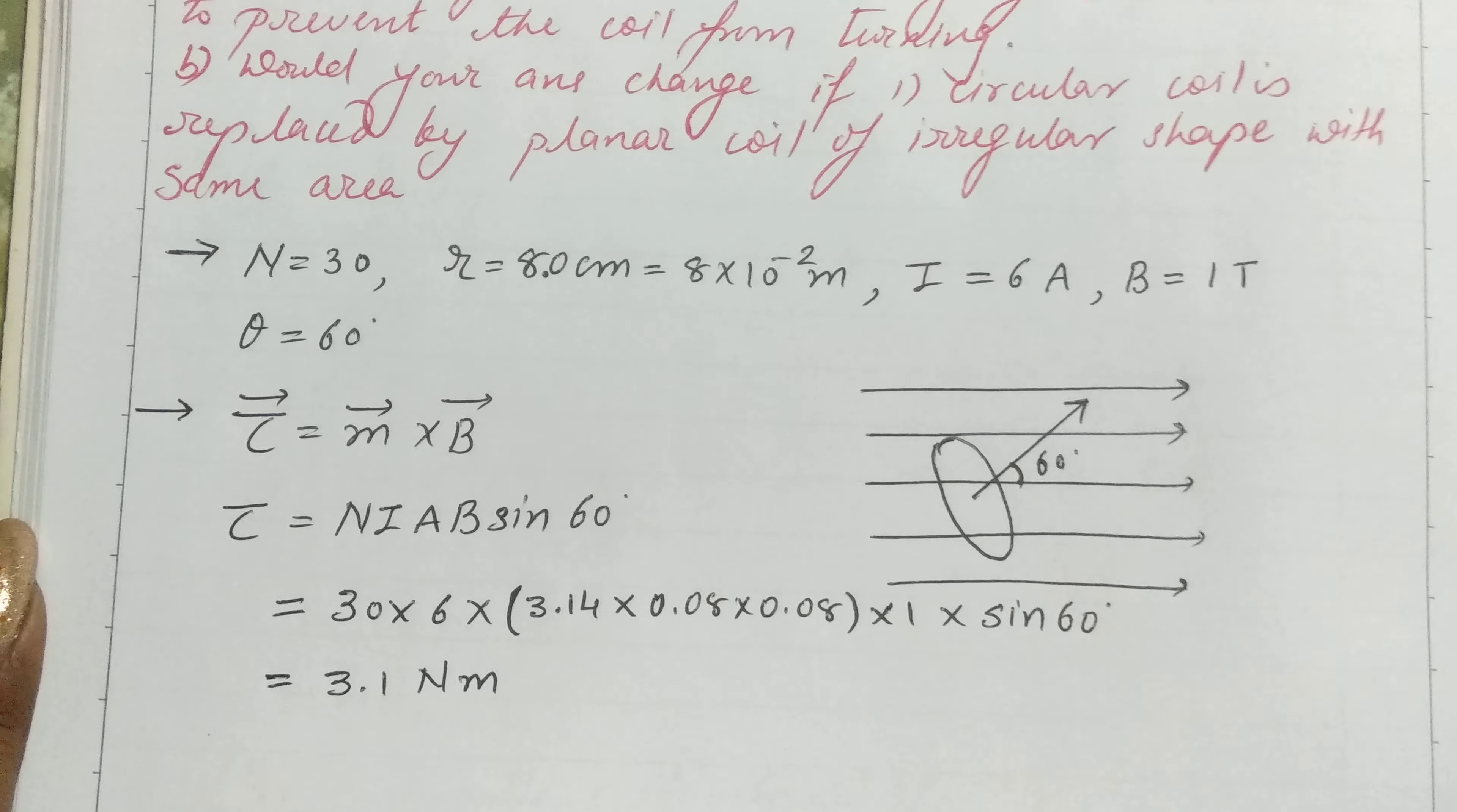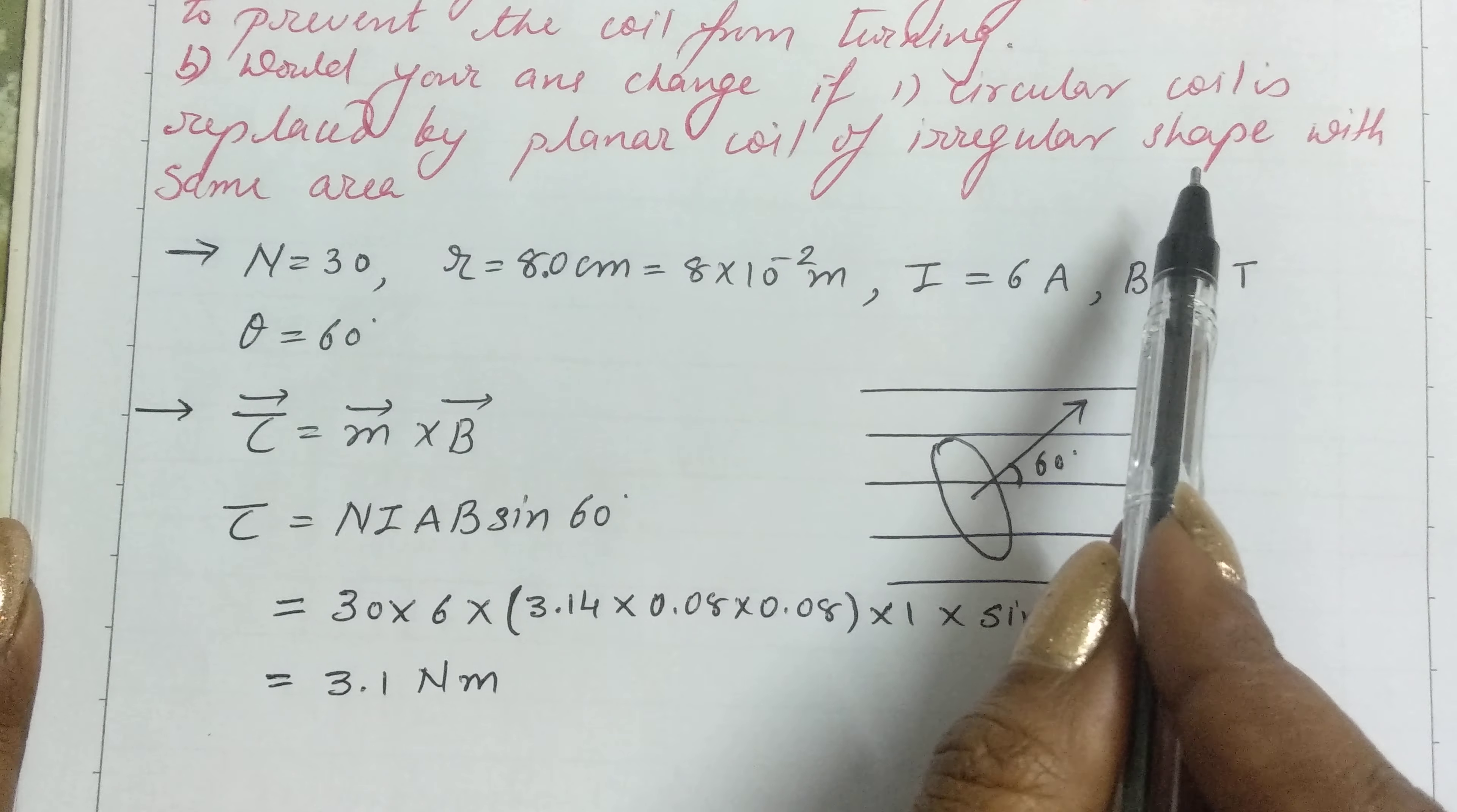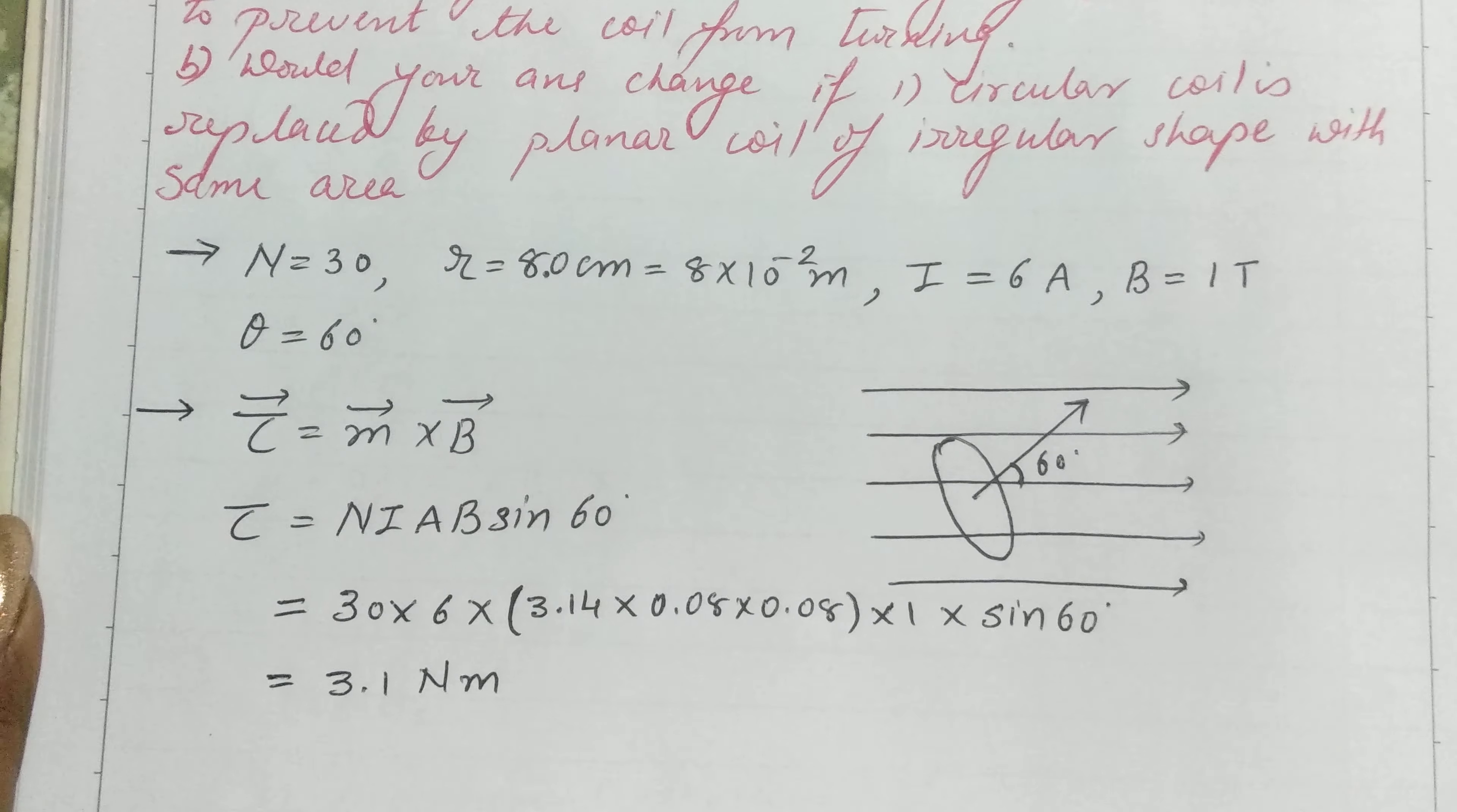The question also asks: would your answer change if the circular coil is replaced by a planar coil of irregular shape with the same area? Our answer is that the torque will not change.